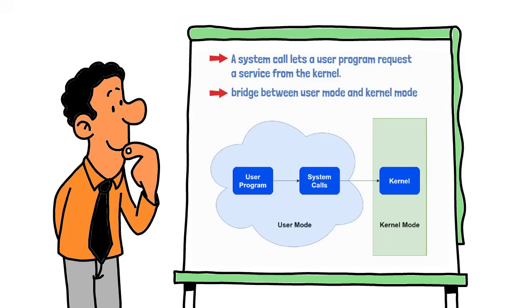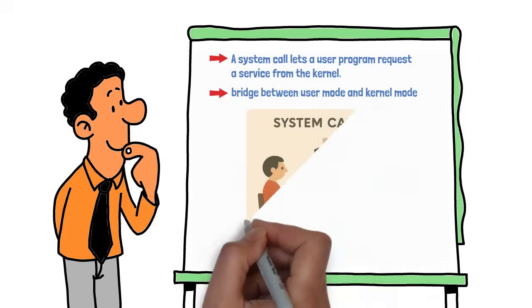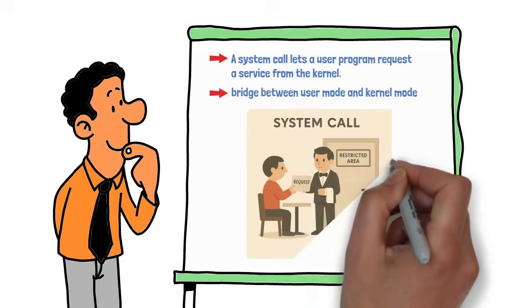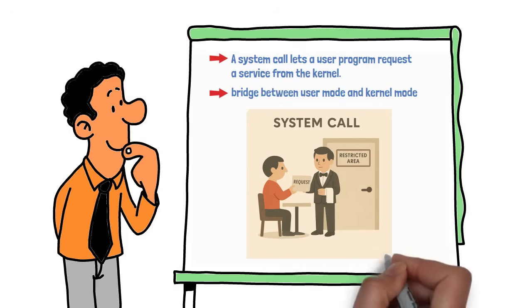Think of it like placing an order at a restaurant. You, the user program, don't go into the kitchen, kernel, yourself. You make a request through the waiter, or the system call, who takes your order to the restricted area where only authorized staff can go.